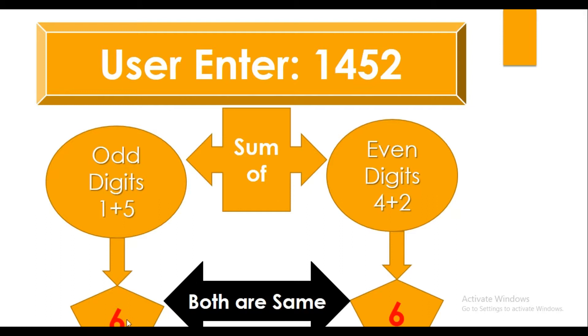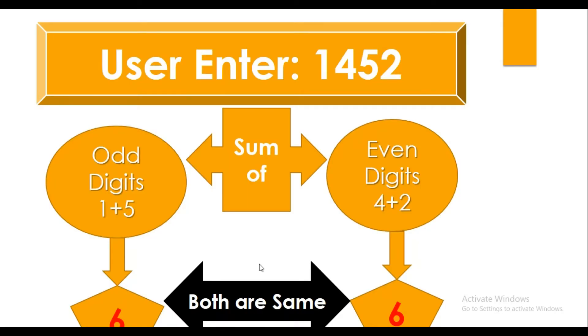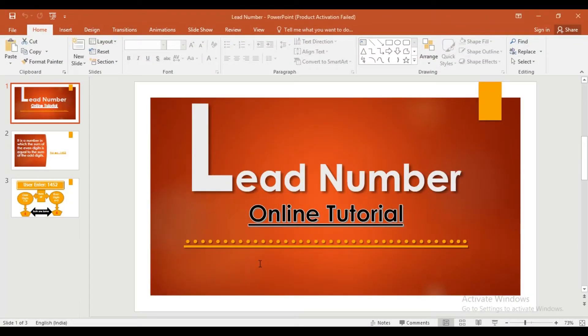If the odd digit sum and the even digit sum are both the same, then that number is called a lead number. So now through programming, let's do this lead number program.